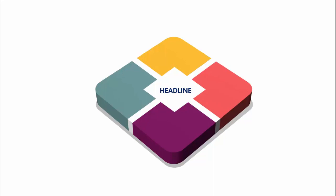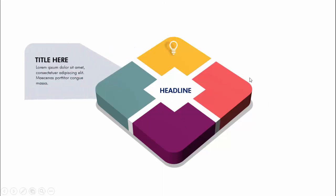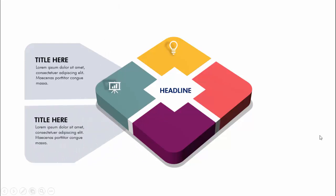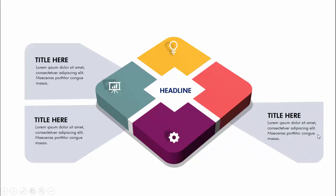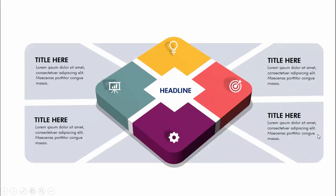In today's tutorial I'm going to show you how to create a four 3D options infographic slide in PowerPoint. This is how the slide works - when I click you can see I have created four different color objects that look like a 3D object. You can add your headline, and when I click the first icon comes, then you can add your title and detailed text, then the second, third, and fourth options come. You can see I've added a shadow effect at the bottom also.